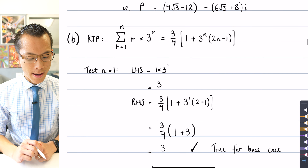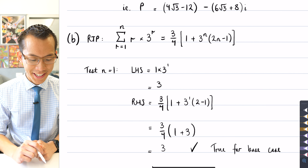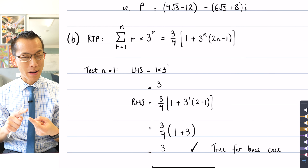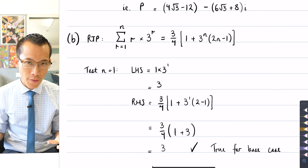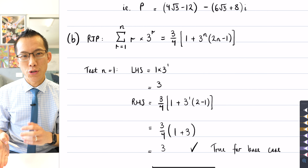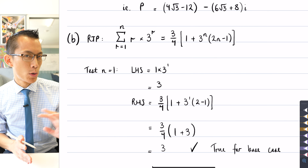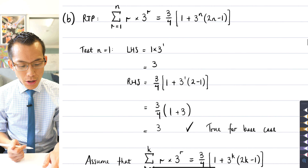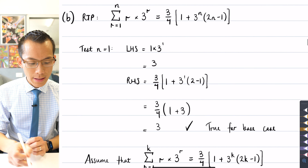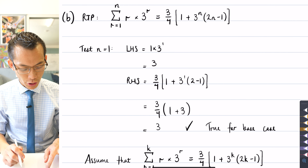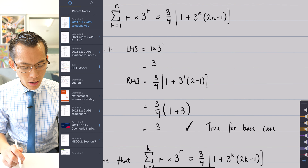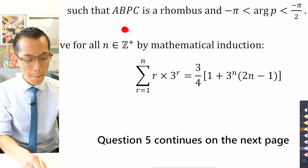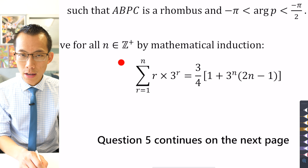As most proofs by induction begin, I want to take my base case, evaluate it, verify that it's true, make my assumption, and then most of the work is going to be in the proof step as usual. Noting that we go back to the question, this is true for all positive integer values of n.